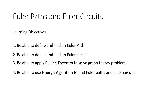We have four learning objectives for this lesson. One, be able to define and find an Euler path. Two, be able to define and find an Euler circuit. Three, be able to apply Euler's theorem to solve graph theory problems. And our fourth learning objective is to be able to use Flurry's algorithm to find Euler paths and Euler circuits.